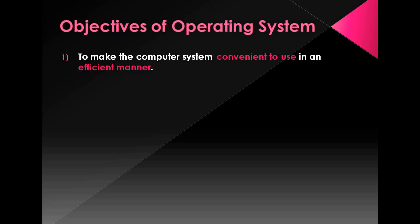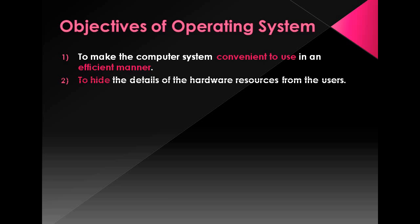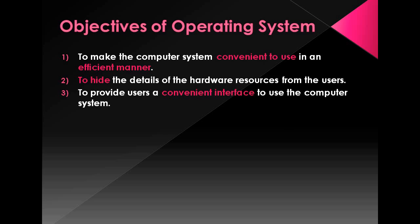The first objective of the operating system is to make the computer system convenient to use in an efficient manner. Second objective: to hide the details of the hardware resources from the users. As we have seen in the last lecture, the diagram shows that the hardware is used only by the operating system — the user cannot directly use the hardware.